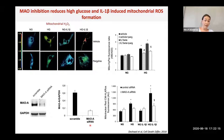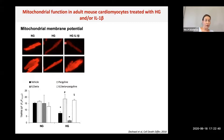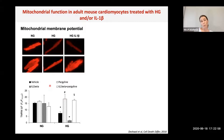We tested this with a genetic approach as well, silencing MAO expression with siRNA, achieving approximately 70% reduction in enzyme expression. With siRNA against MAO, we did not see an increase in mitochondrial ROS formation upon high glucose or IL-1β exposure. We also looked at mitochondrial function — high glucose caused mitochondria to start losing membrane potential, further exacerbated by the combination with IL-1β, and pargyline prevented this, suggesting that ROS produced by MAO target mitochondria to induce mitochondrial dysfunction.